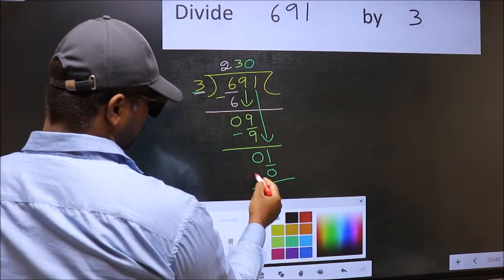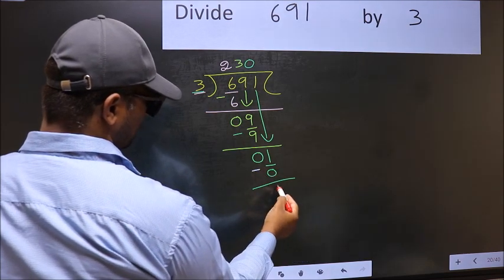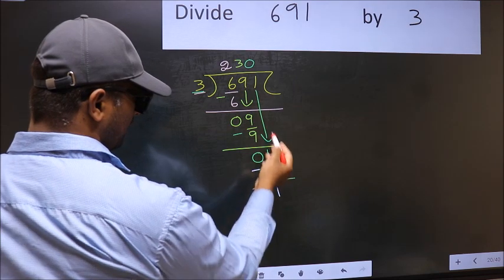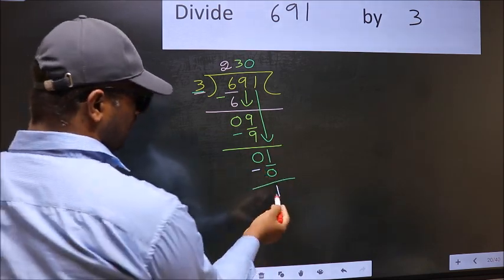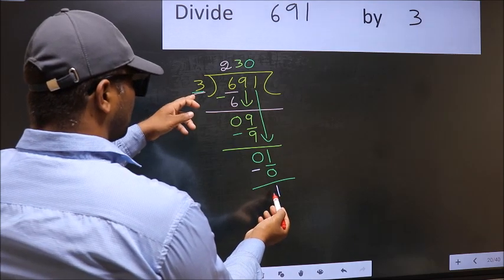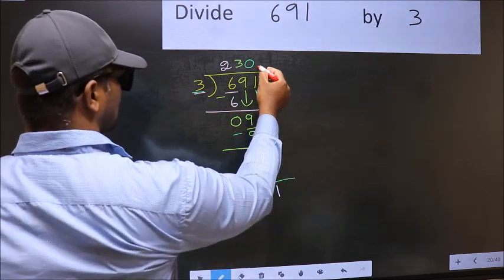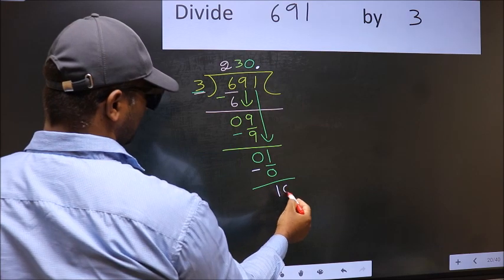Now you subtract. 1 minus 0 is 1. Over here, we did not bring any number down, and 1 is smaller than 3. So now you can put a dot and take 0.